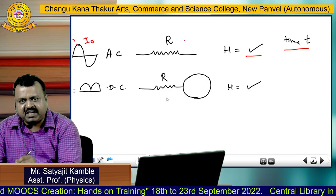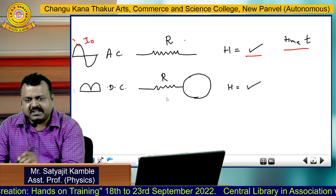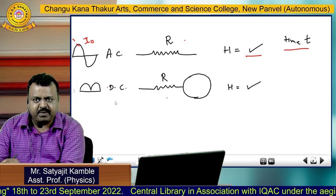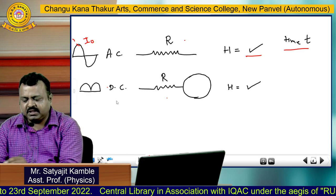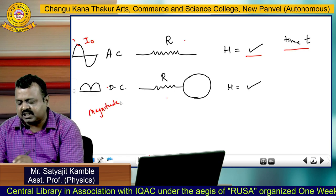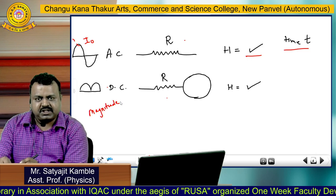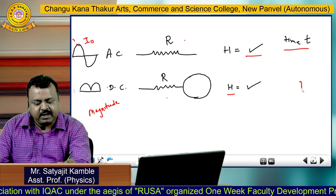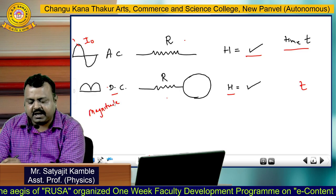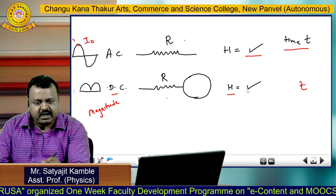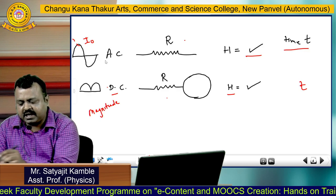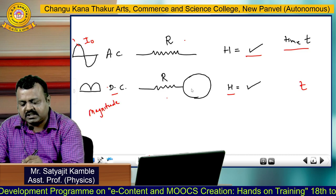Now we have the value of heat generated in resistance R for time T by passing alternating current of peak value I naught. Further, you take the same resistance R and this time pass direct current. Direct current we can measure using an ammeter. Now you have to adjust the magnitude of the direct current in such a way that it generates the same amount of heat in the same time as in the case of alternating current. That magnitude of direct current which generates the same amount of heat in the same time when passed through the same resistance R as in the case of alternating current is called the RMS value.